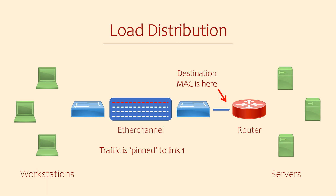So if that was happening, we would change our load balancing method to include more information — maybe source MAC or source IP address. What we really want is a lot of variety, which helps spread the traffic across the physical links in the EtherChannel. The key point to take away is that there is no guarantee that traffic will be evenly spread across these links. We might be expecting 4G of bandwidth, but we might find we're getting a bit less. We'll cover this more in the lab if you're interested.